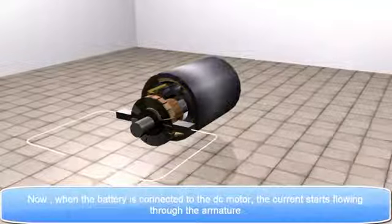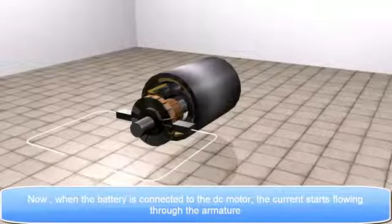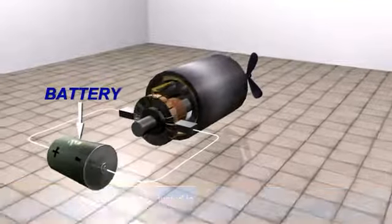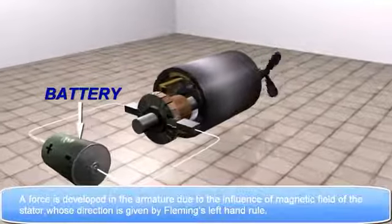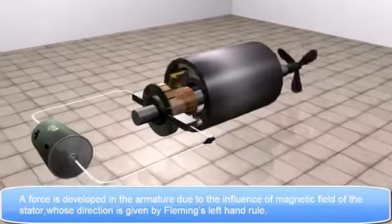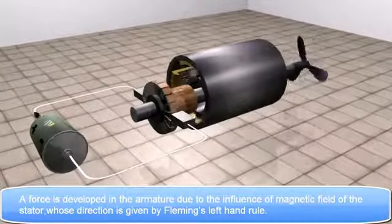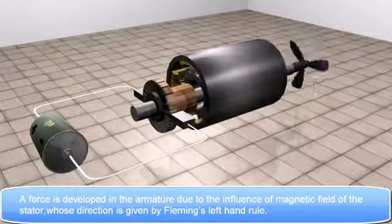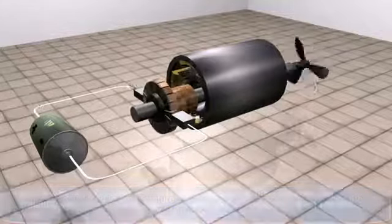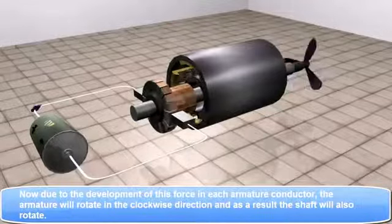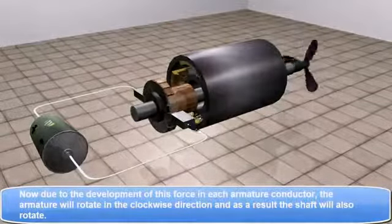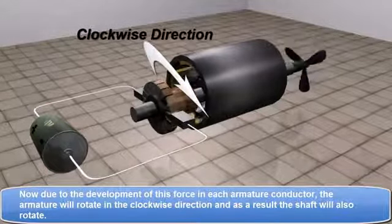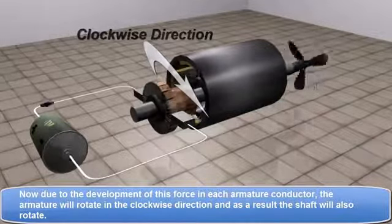Now, when the battery is connected to the DC motor, the current starts flowing through the armature. A force is developed in the armature due to the influence of magnetic field of the stator, whose direction is given by Fleming's left-hand rule. Now, due to the development of this force in each armature conductor, the armature will rotate in the clockwise direction, and as a result, the shaft will also rotate.